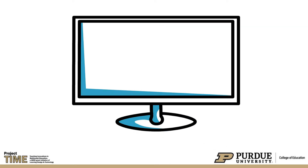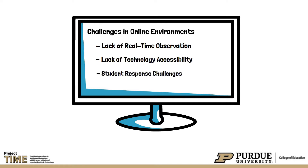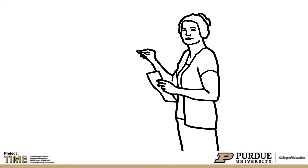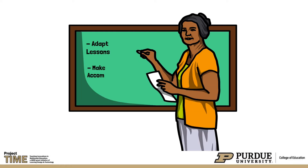Determining student needs can be challenging, especially within online environments, due to lack of real-time observation, lack of technology accessibility, or the difficulty related to confirming that students are individually responding to their assignments without outside help. Determining academic needs does not result in curriculum changes; however, teachers can adapt lessons and make accommodations to meet student needs.